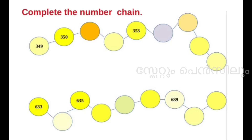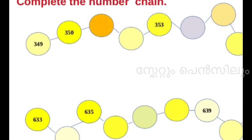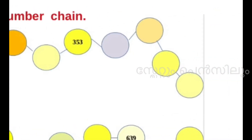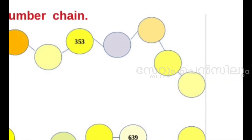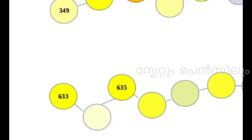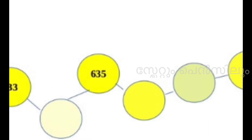The first number chain starts with 349 and 350, then after you complete it: 351. The next one is 633 and 634, then 635.